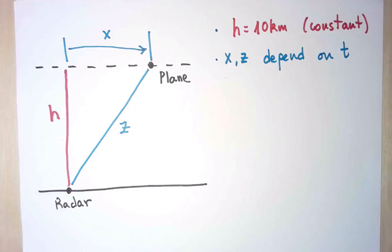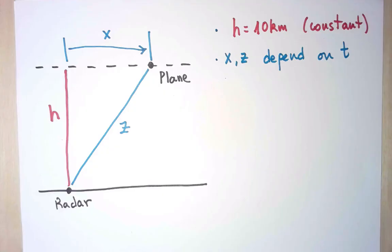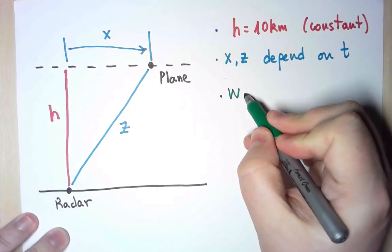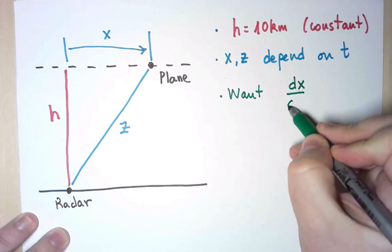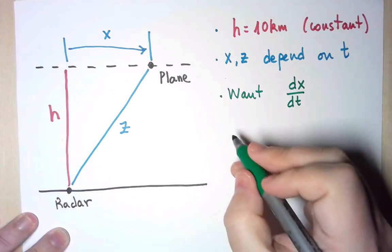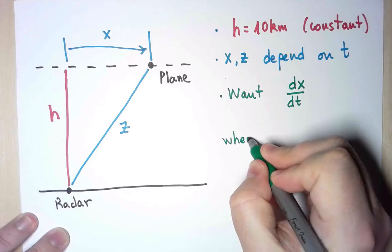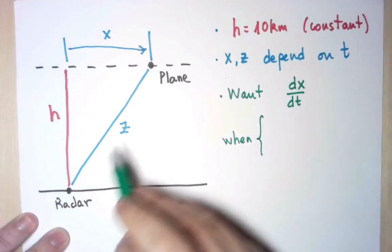Now, what do I want, and what do I know? I want to figure out the speed of the plane. So what I want is the derivative of x with respect to t. And I want that at the time where the info I have is that the distance between the radar and the plane is 20 km,